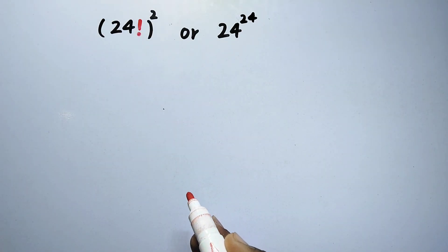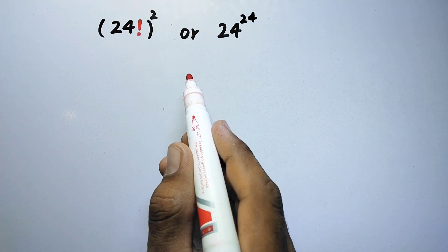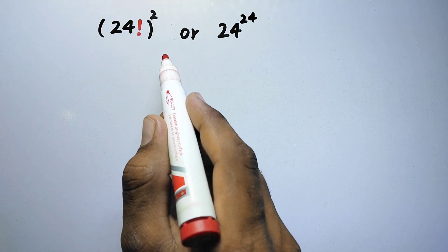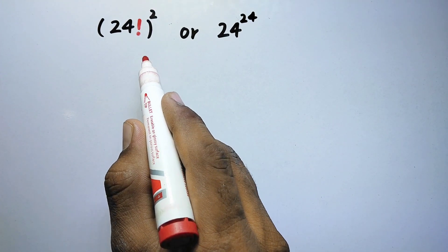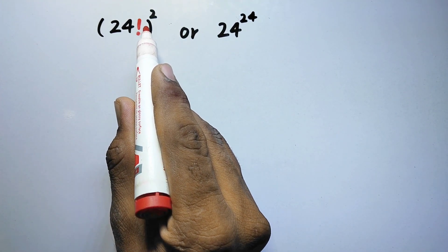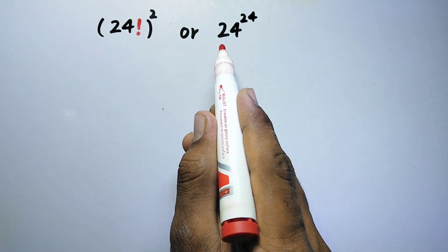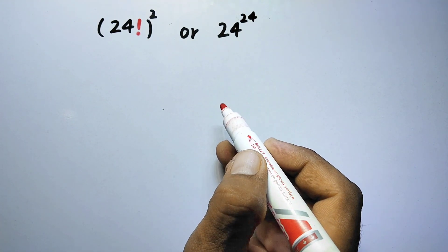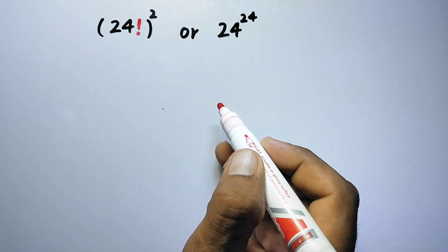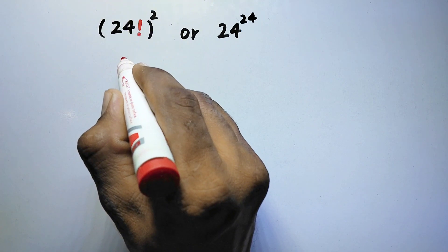Hello everyone and welcome to ExplodeMaths. In this video, we have to prove which value is larger: 24 factorial to the power square, or 24 to the power 24. So let us see its solution.